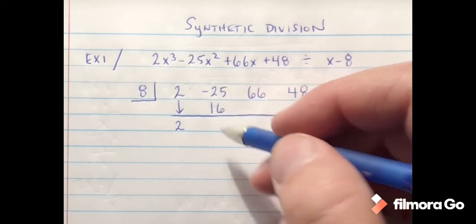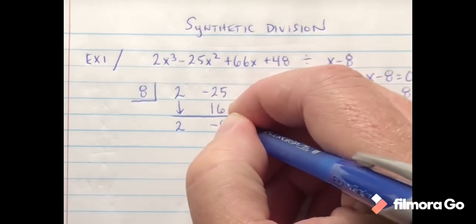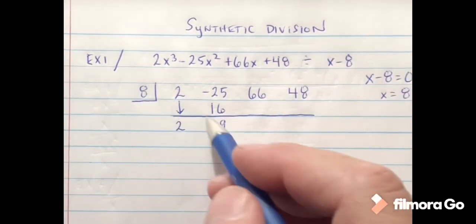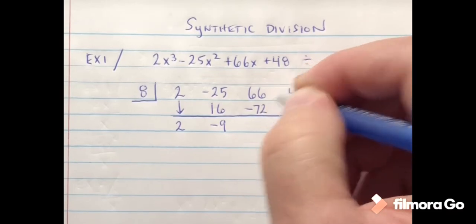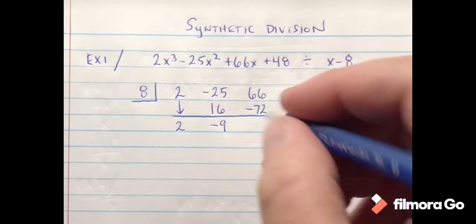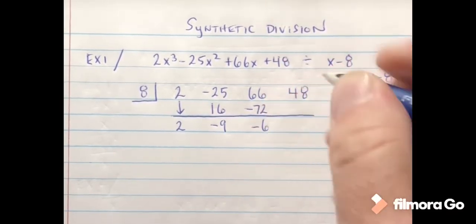I'm then going to add my column. So negative 25 and 16 gives me negative 9. 8 times negative 9 gives me negative 72.